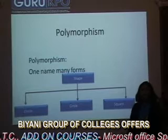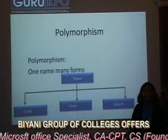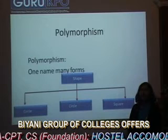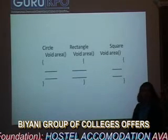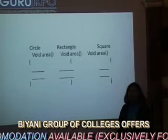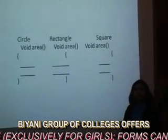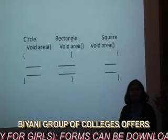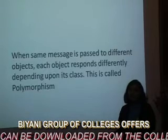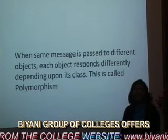Polymorphism consists of two words: one is poly and another one is morph. Poly means many and morph means forms. So polymorphism can be defined as one name, many forms. For example, if we have different objects named circle, rectangle, and square, and we want to find the area of these objects, we mention one function named area. The name of the function is the same, whereas the working will be altogether different for these objects. When the same message is passed to different objects, the objects behave differently. This is called polymorphism.